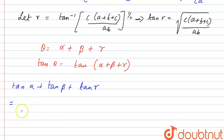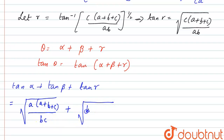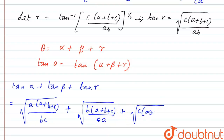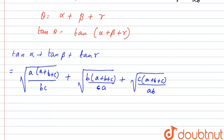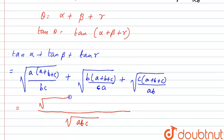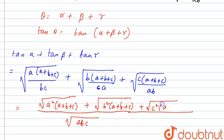Adding the three values: square root of A·(A+B+C)/BC, plus square root of B·(A+B+C)/CA, plus square root of C·(A+B+C)/AB. Taking the LCM, which will be square root of ABC, we get square root of A²·(A+B+C) plus square root of B²·(A+B+C) plus square root of C²·(A+B+C).